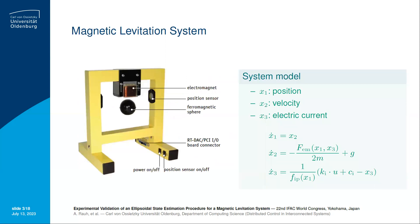The benchmark scenario that we will consider during this presentation is a magnetic levitation system manufactured by the company Enteco, and it especially consists of an electric magnet here on top, which allows us to position a ferromagnetic sphere within the field of the electromagnet with an optical position sensor that allows us to determine the distance between the sphere and the magnet. We represent the corresponding dynamical system model as a three-state system depending on the position x1, the velocity x2, and the electric current x3.